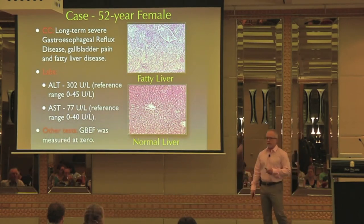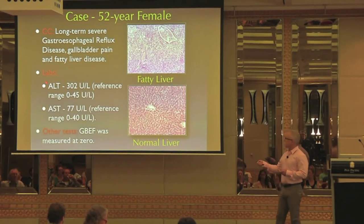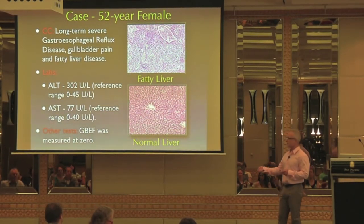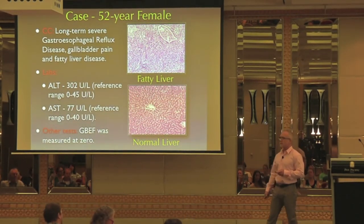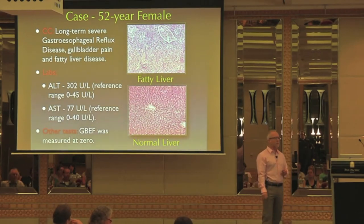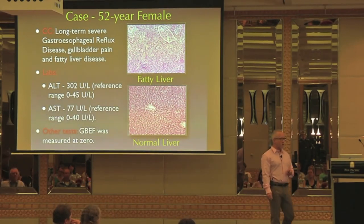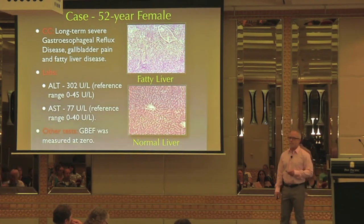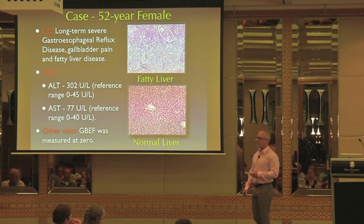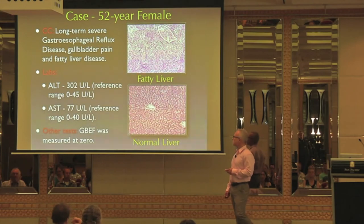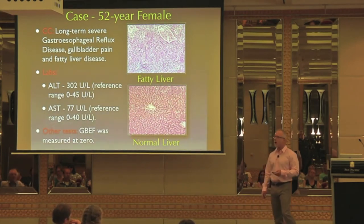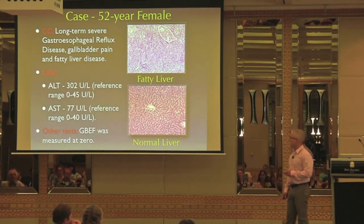They did some scans. Her ALT was at 302, her AST was at 77. They did a liver biopsy and could not figure out where her elevated liver enzymes were coming from. There was no pathological reason for it. This had been going on for some time — at least a couple of years.